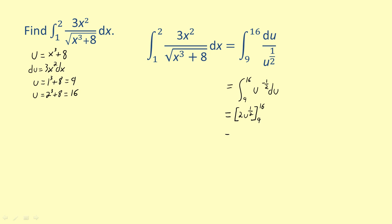Evaluating, we get 2 times 16 to the one half minus 2 times 9 to the one half. Remember that raising an expression to the one half is equivalent to taking the square root. So, simplifying the exponents, we get 2 times 4 minus 2 times 3.